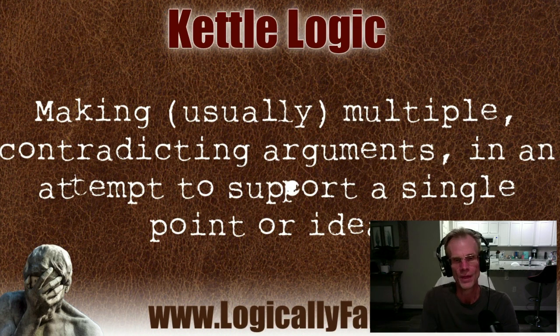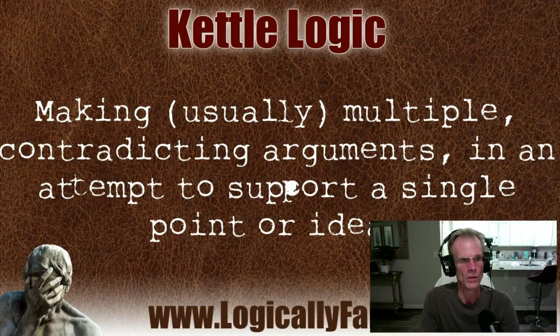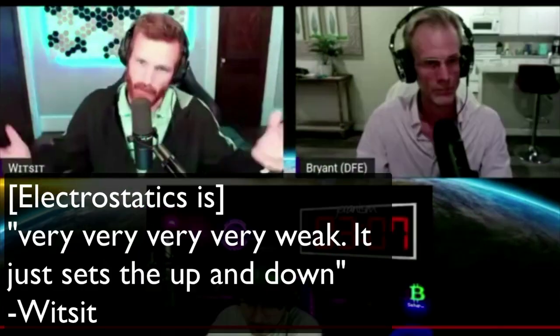I just want to start with a little soundbite. We'll hear what Austin has to say, and then we'll come back and talk about it. Just because things change — thunderstorms or whatever — it doesn't matter because electrostatics is super weak. When something fluctuates between 9.8 meters per second squared to 9.73, well, okay, because electrostatics is super weak.